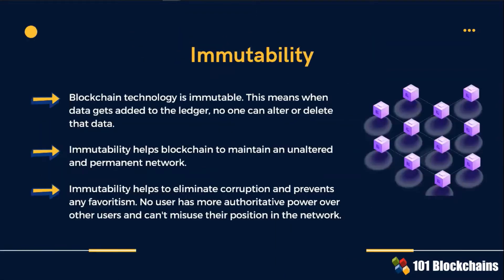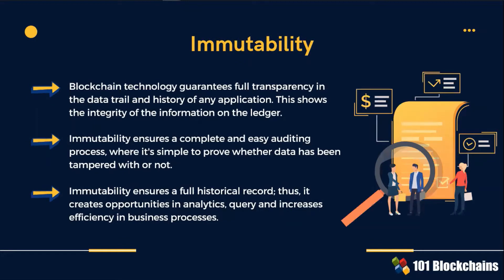The first bullet point is the one to always keep in mind: blockchain technology is immutable. When data gets added to the ledger, no one can alter or delete that data. Remember that this also means that data must be verified and trusted before being input in blockchain. Among the key features of immutability, immutability ensures a complete and easy auditing process, which as a direct consequence increases efficiency in business processes.